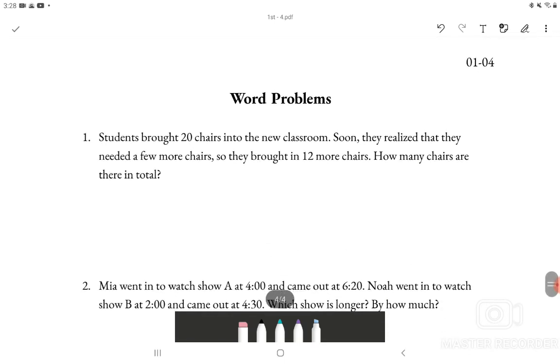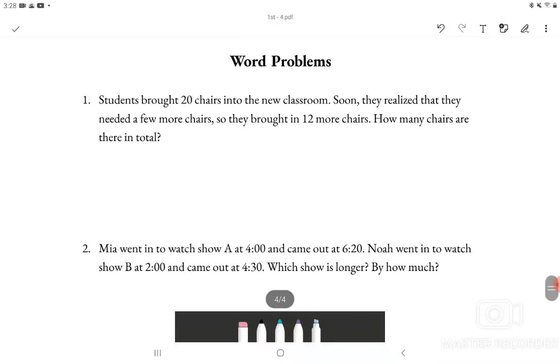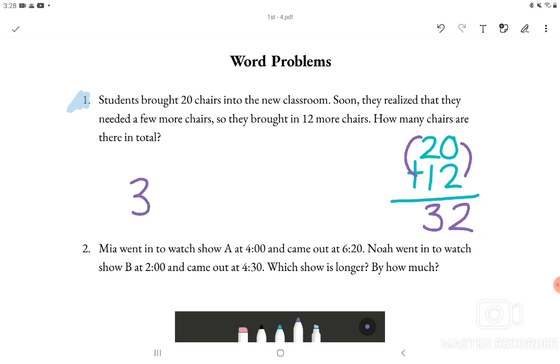Now let's move on to the last section which is word problems. And I will just do number 1. Students brought 20 chairs into the new classroom. Soon they realized that they need a few more chairs so they brought in 12 more chairs. How many chairs are there in total? So there were 20 chairs to begin with. And they realized that they needed a few more chairs so they brought in 12 more chairs. So we would have to add 20 and 12. Let's start by adding the ones place together. So 0 plus 2 will be 2. And 2 plus 1 will be 3. So there are 32 chairs in total.